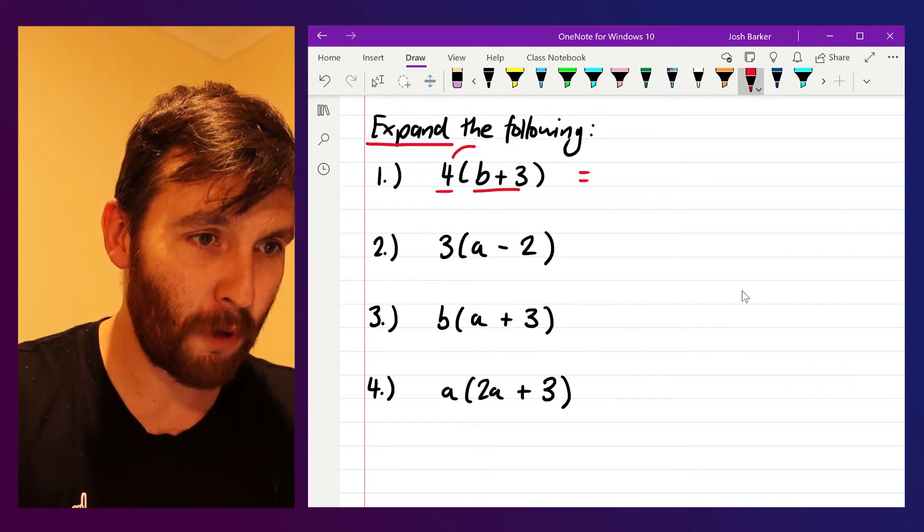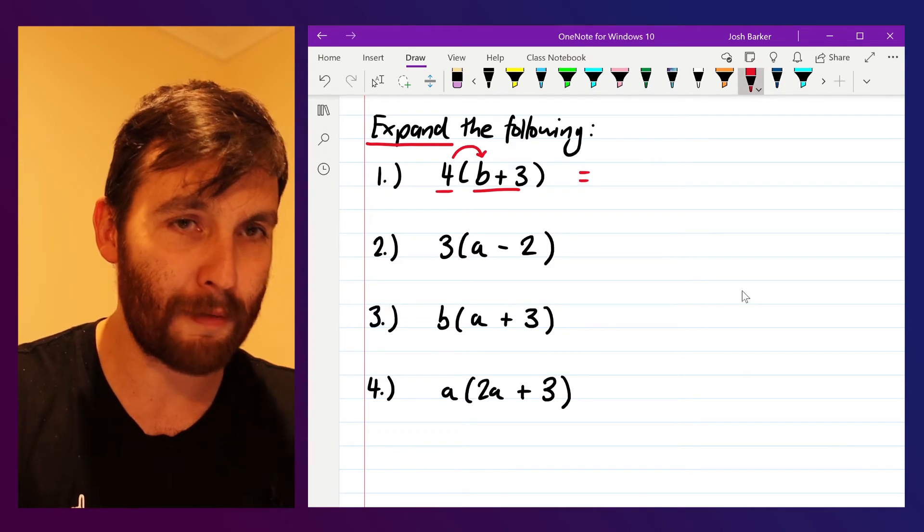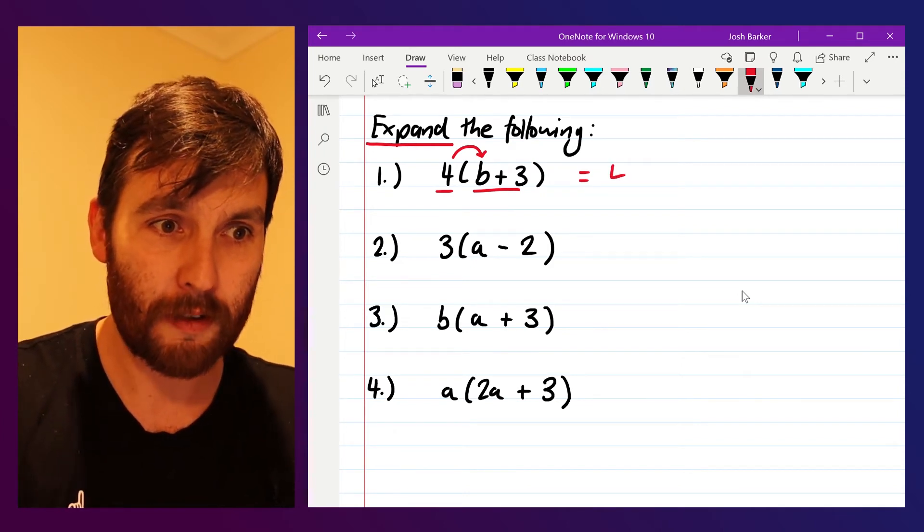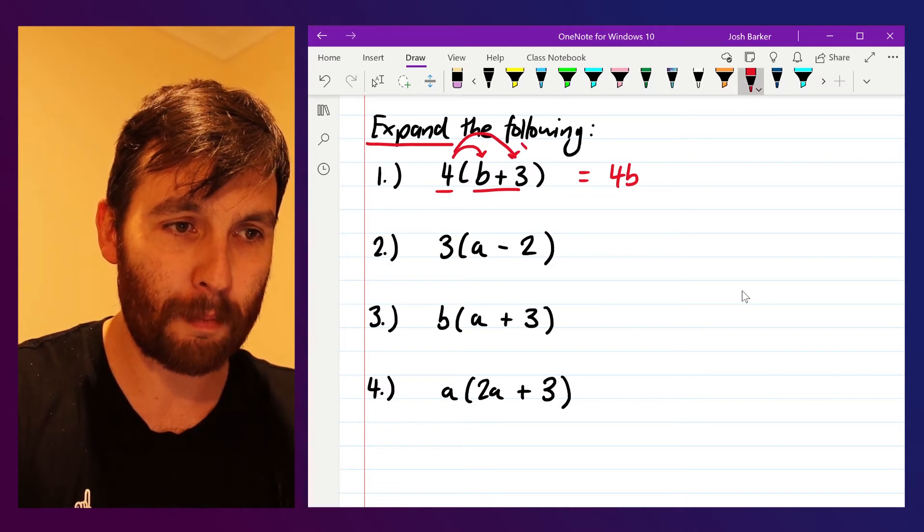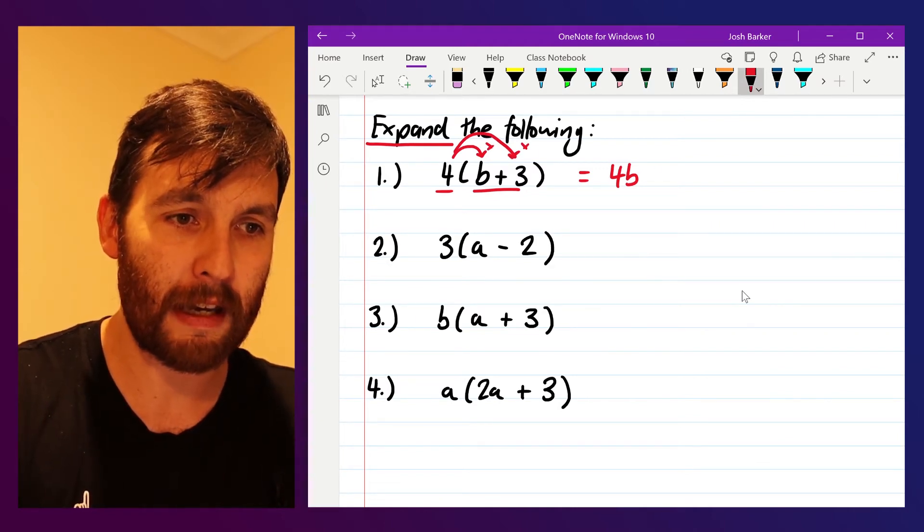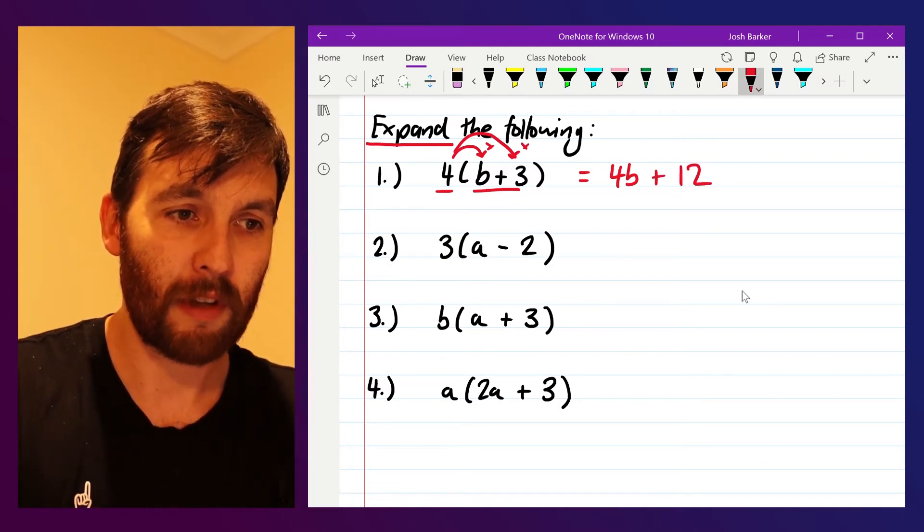So what I do there is take my four on the outside and multiply it by everything that's inside the bracket. So four multiplied by b gives me four b. Four multiplied by three gives me twelve, and that's it.